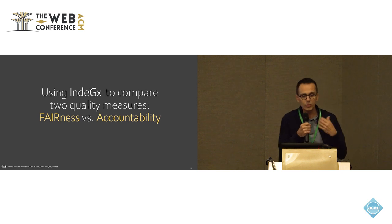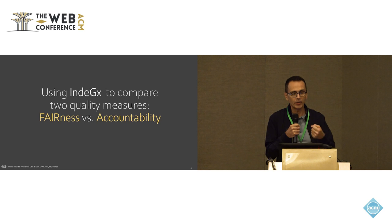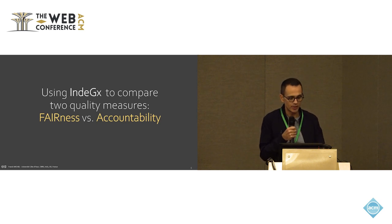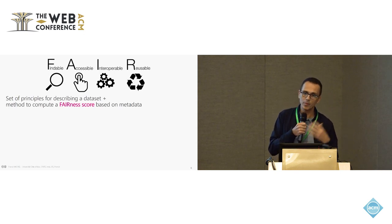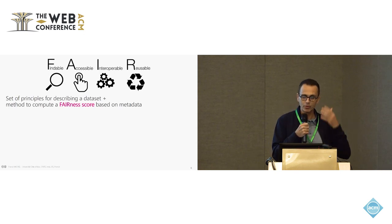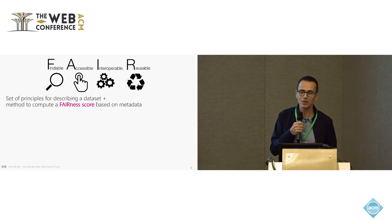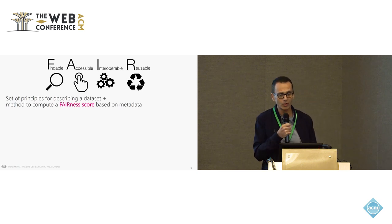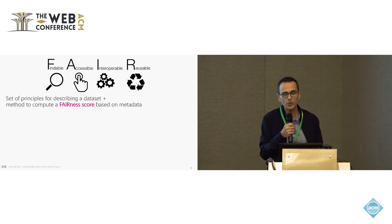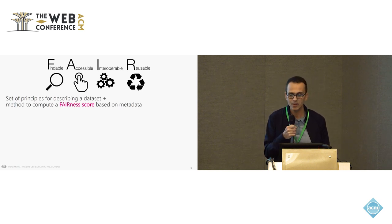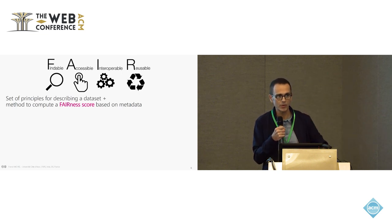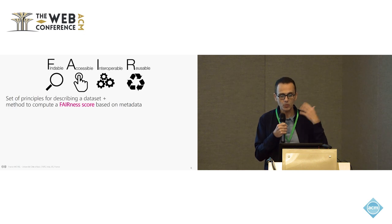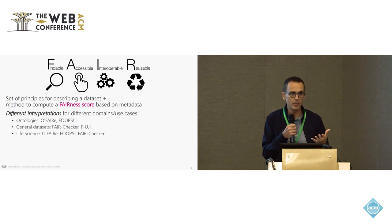I want to illustrate how we have used GINDEX to implement and compare two different quality measures for RDF datasets: fairness and accountability. FAIR means Findable, Accessible, Interoperable, and Reusable — it's a set of principles for describing datasets. The principles are derived into multiple sub-principles, and you can interpret them to come up with a fairness score, which is based only on the metadata.